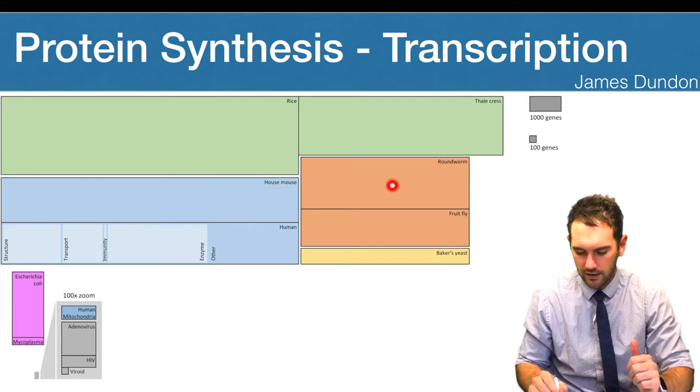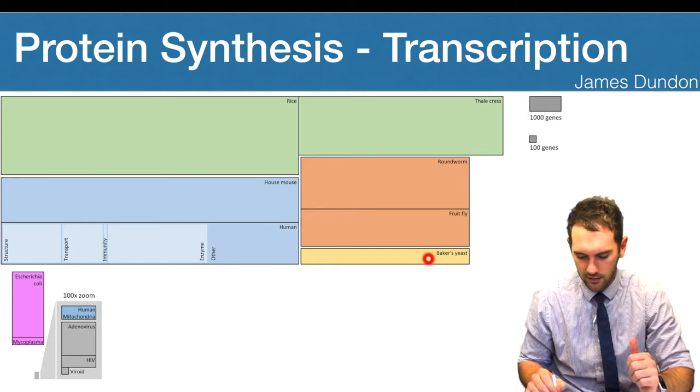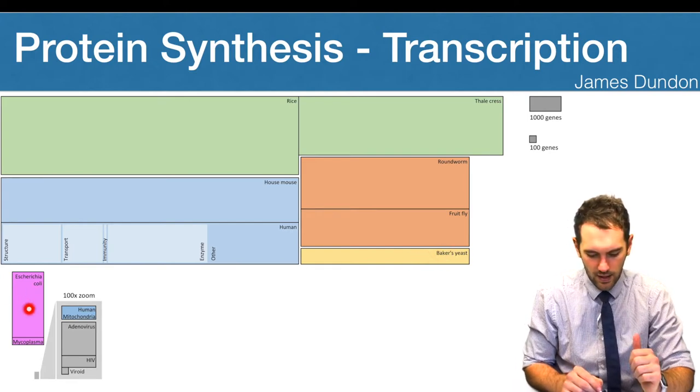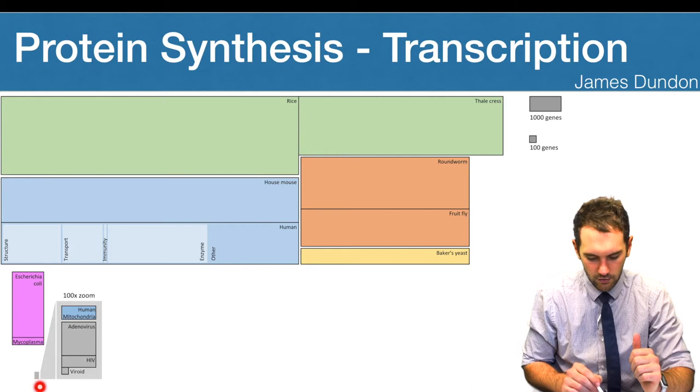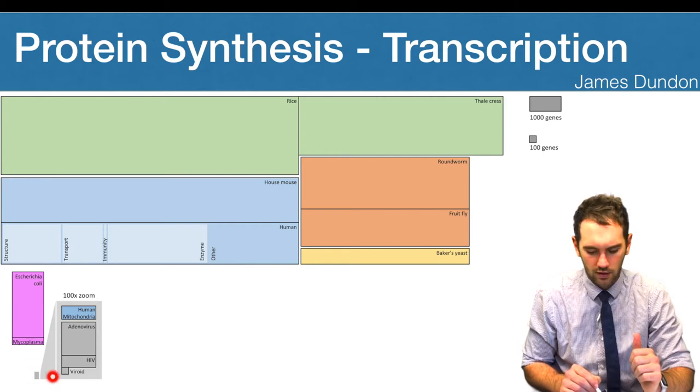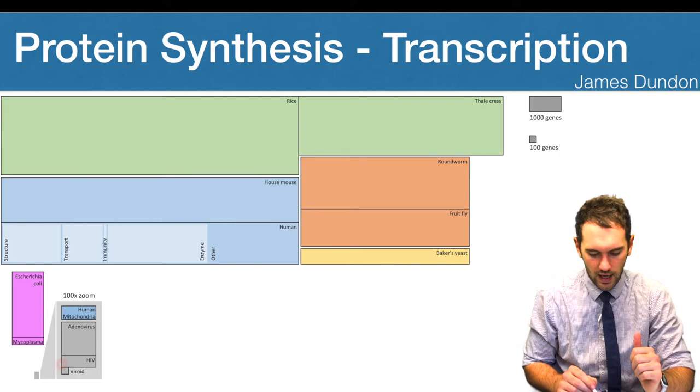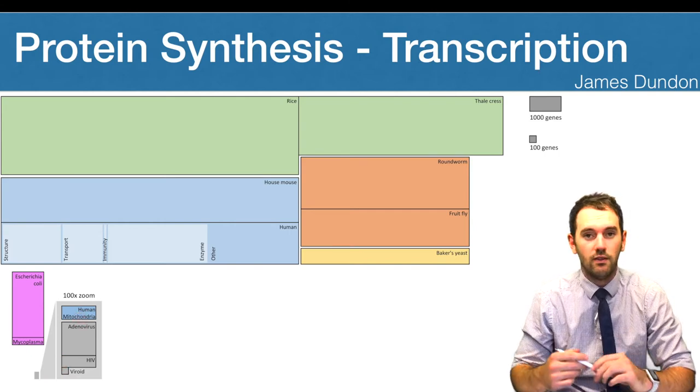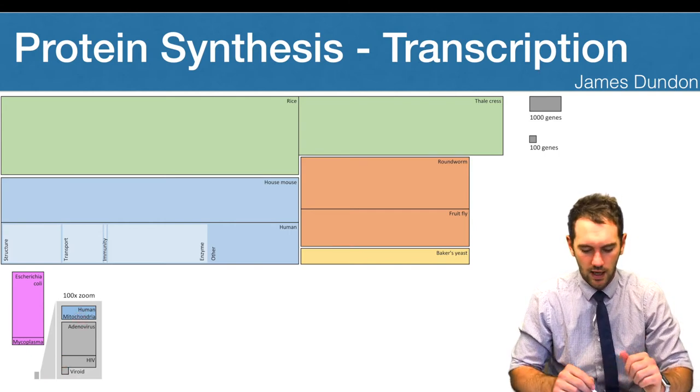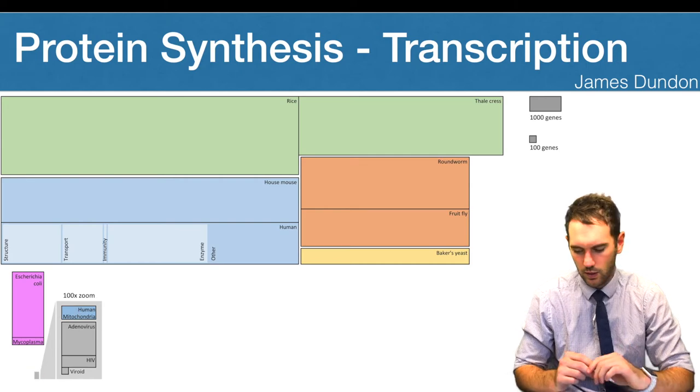You can see slightly less in the roundworm, slightly less in the fruit fly, even less in yeast, less in bacteria. And then you can see this really small section here represents what we'd see in some viruses. And also, mitochondria, remember, they have their own DNA if you didn't know already. And that's how much they're going to have as well.